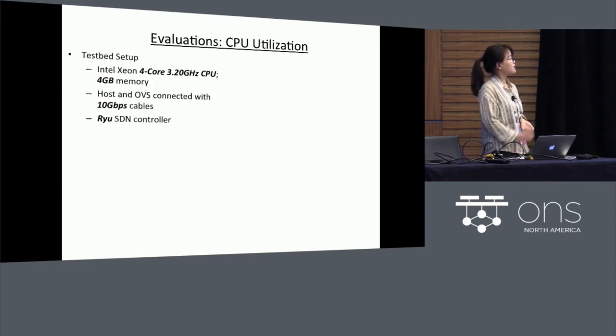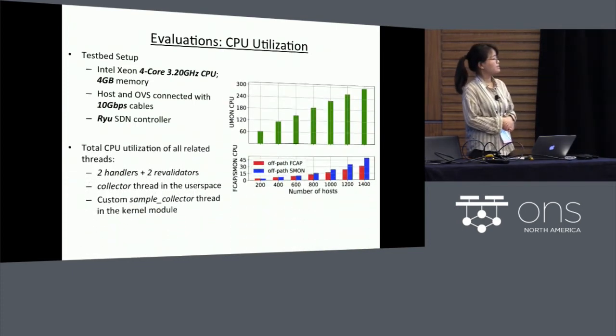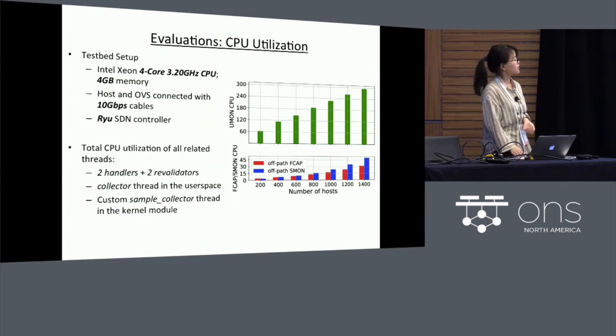Our testbed consists of three machines. The OVS and the host are connected through 10 gigabits per second cables, and the host serves as both the packet generator and the data sink. The OVS machine is connected to the SDN controller running Ryu. Here on the right-hand side, we show the total CPU utilization of all related threads for the different monitoring designs. As we can find here, the UMON incurs highest CPU utilization.